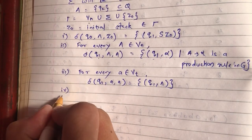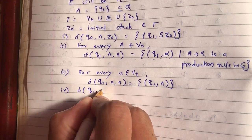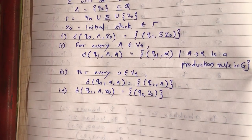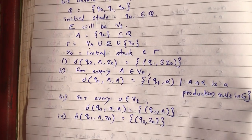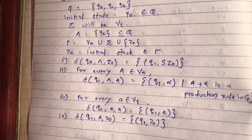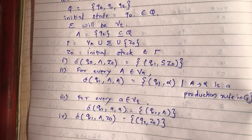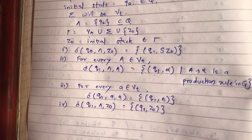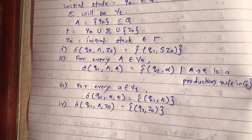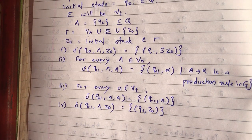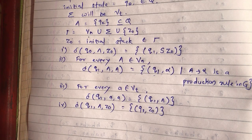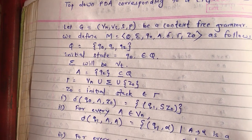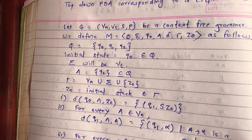The final rule is: δ(Q1, null, Z0) = (Q2), meaning when everything is finished and Z0 is on top of the stack, we enter the accepting state Q2. Steps 1 and 4 are straightforward — push the starting symbol, and transition to accepting state. Steps 2 and 3 are key: write deltas for all production rules in Q1, and write pop conditions for all terminal symbols. This is how we convert a grammar into a PDA.